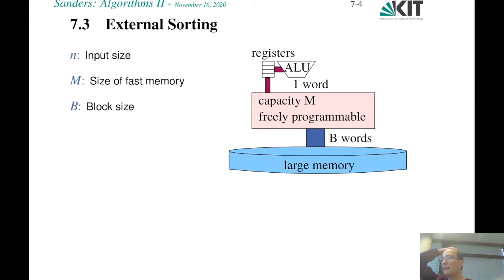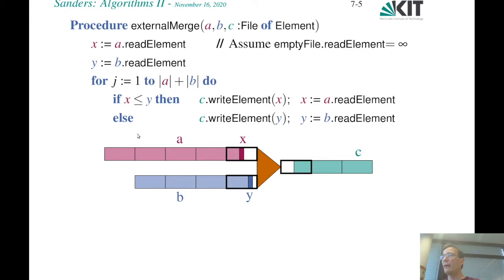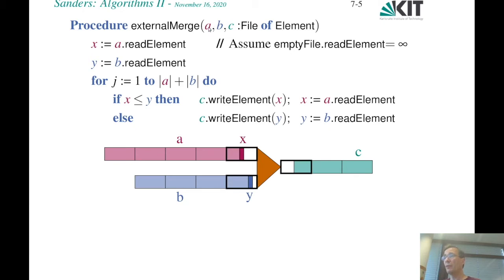I will now spend a bit more time explaining how to do external memory sorting, which turns out to be a key part of building many further algorithms. Sorting basically puts things together in an order you want to process them, and that is a pattern for doing many things in external memory. To sort N elements in the external memory model, I will first explain binary merge sort in a formulation suited for external memory. For that we need an external memory binary merging routine, which takes three files as input: two files A and B to be merged, and a file C that receives the sorted output.